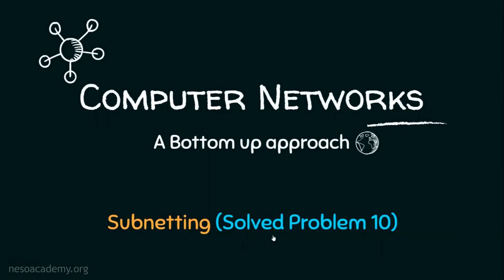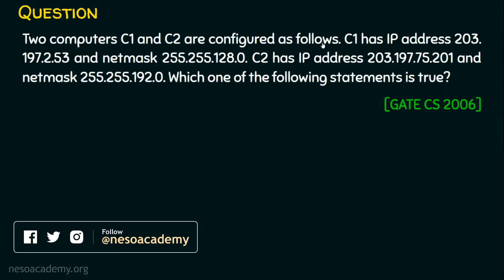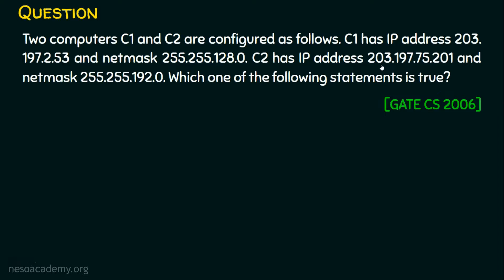In today's lecture, we will solve problem number 10 in subnetting. The question is: two computers C1 and C2 are configured as follows. C1 has IP address 203.197.2.53 and the subnet mask 255.255.128.0. C2 has IP address 203.197.75.201 and the net mask 255.255.192.0. Which one of the following statements is true? This question was asked in the year 2006 in Gate Computer Science.